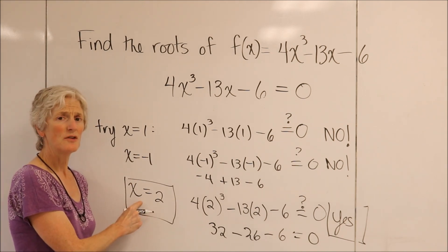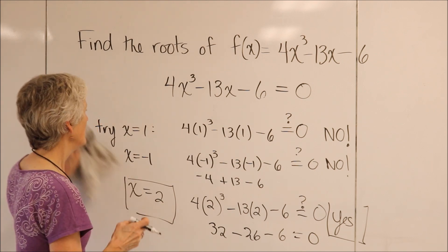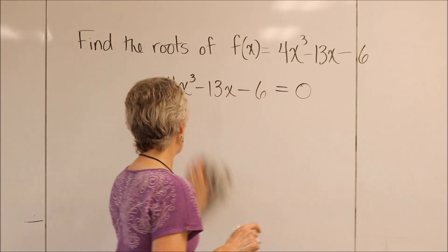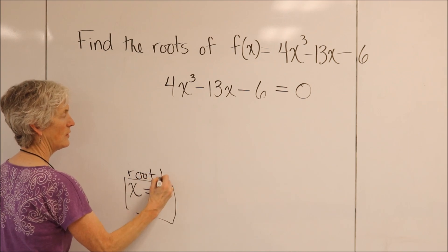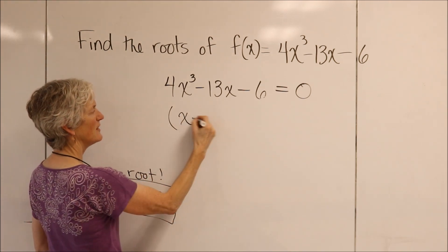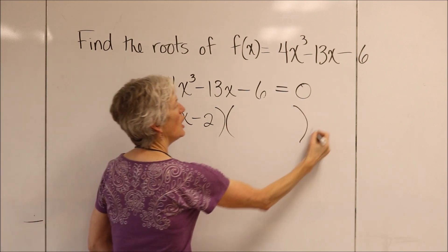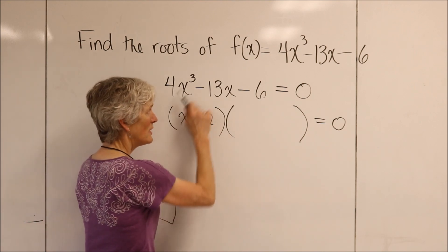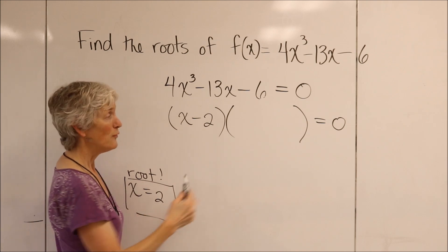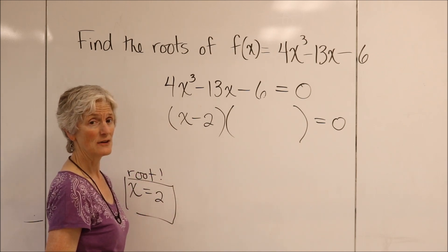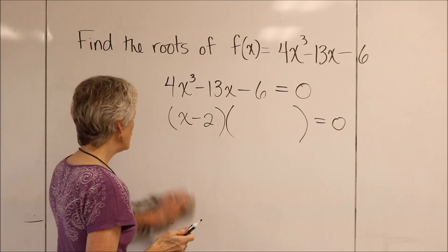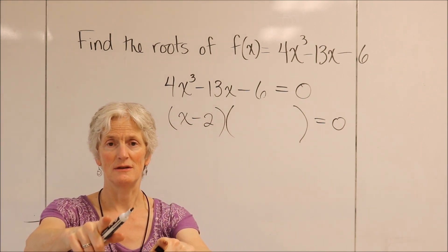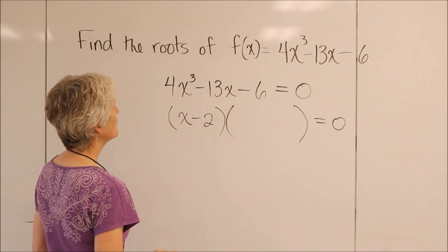If I have found a root, I have found a factor. If I have found a factor, I can find another factor. I have found a root, and if the root is 2, then that came from a factor of x minus 2. All I have to do now is find the other factor. At this point you can do some educated guessing and checking, or if you want a more systematic approach, you can do polynomial long division. Everybody's favorite. Let's do it.